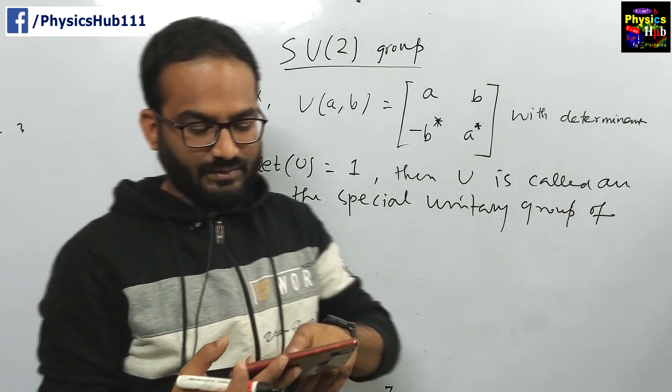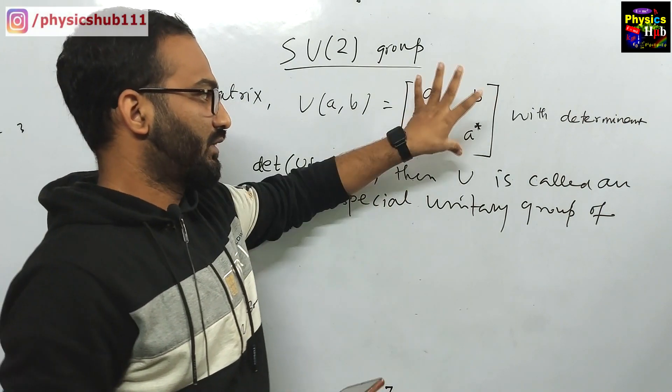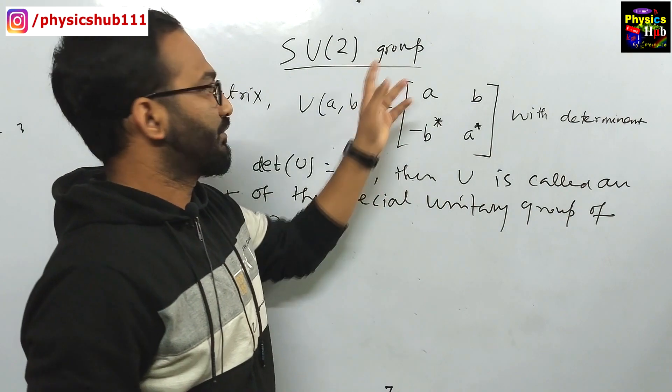Now any of the matrices given in the question which will satisfy this condition, the determinant will be 1 and this type of element will be given. Then that will be called as an element of the SU(2) group.